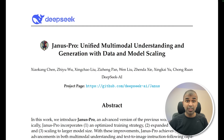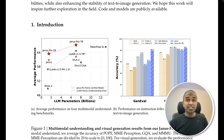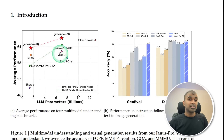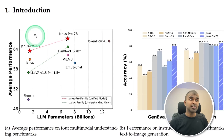DeepSeek just released another amazing model: Janus Pro, a unified multimodal understanding and generation model with data and model scaling. This model is free to use and is ahead in the AI race. It is a multimodal model, which means you can input an image and it is able to describe what that image is.